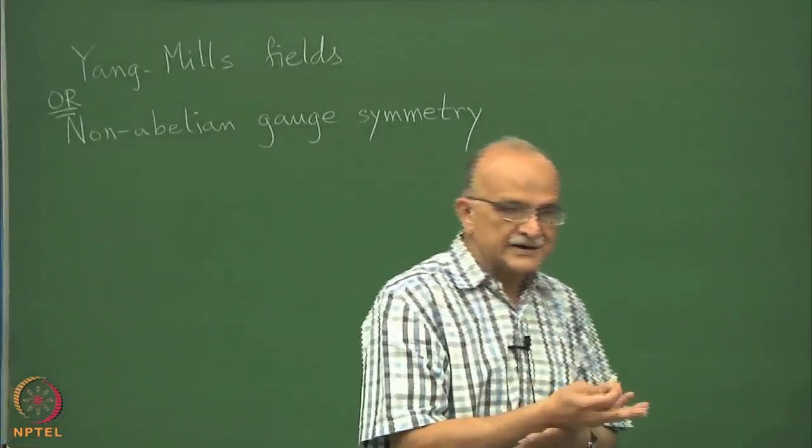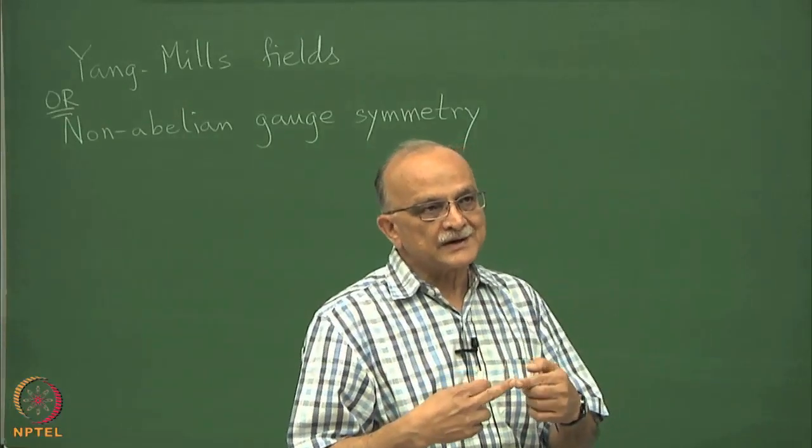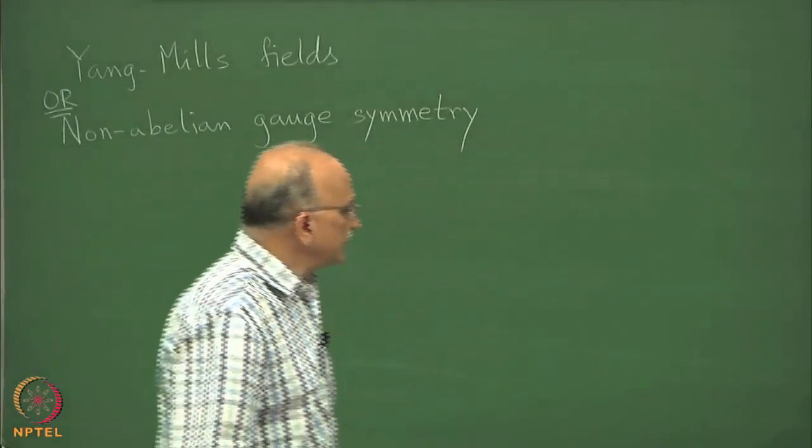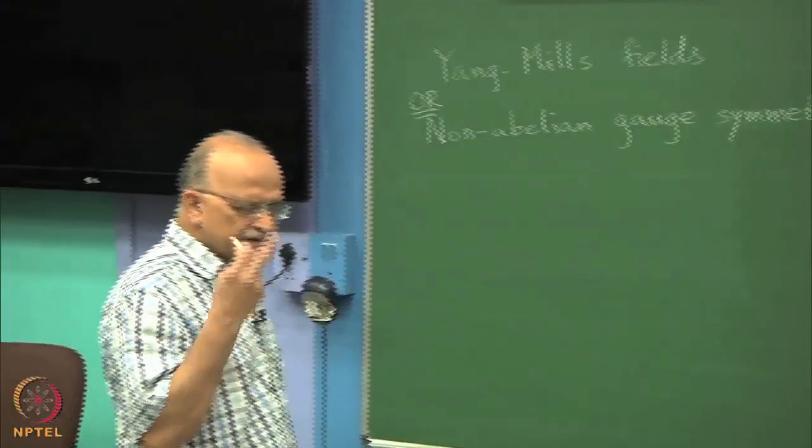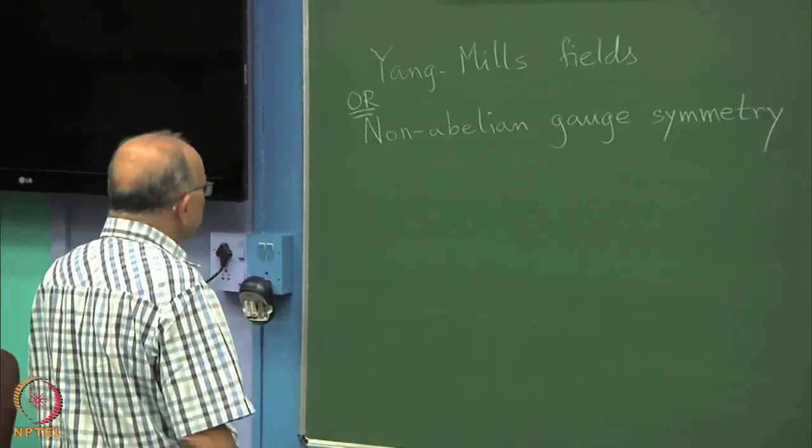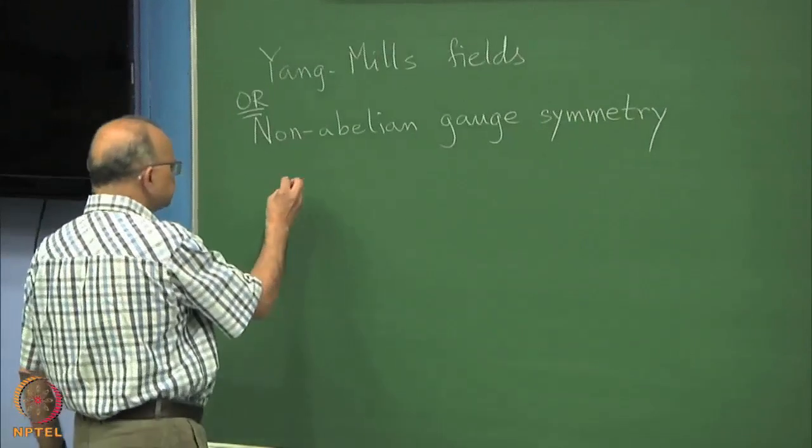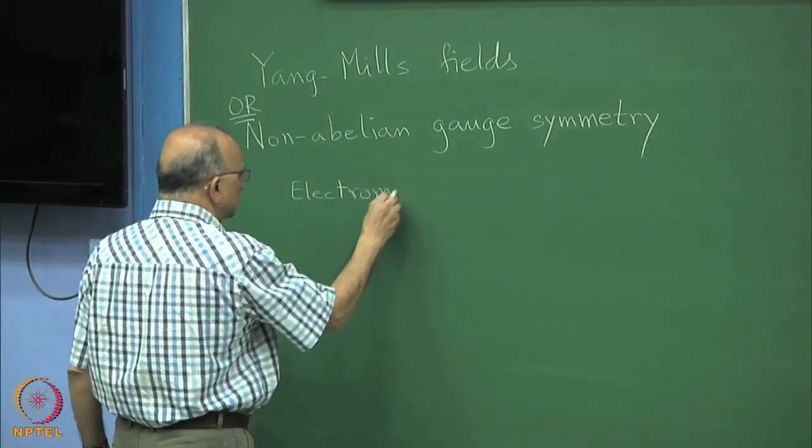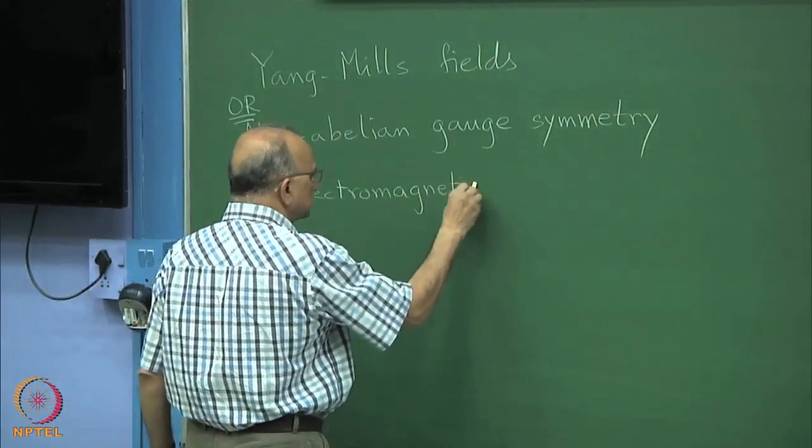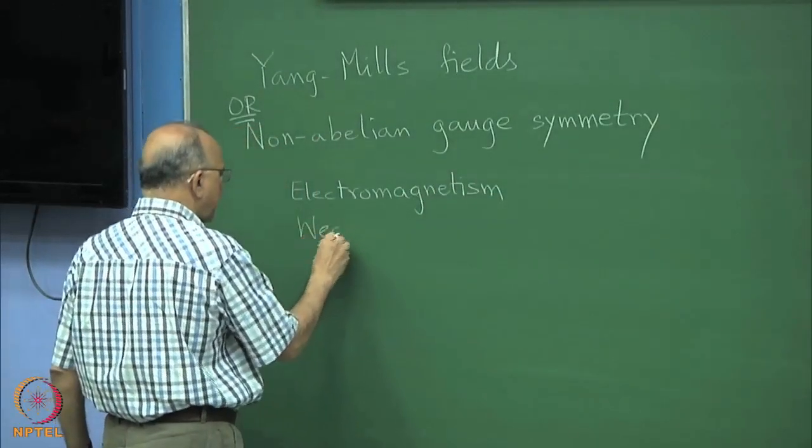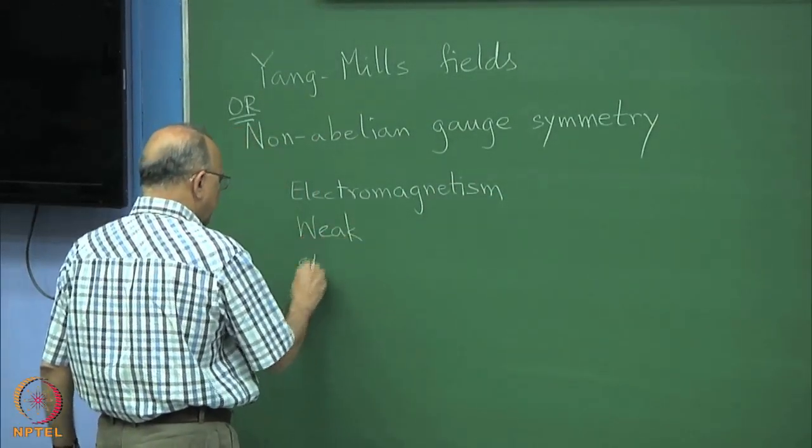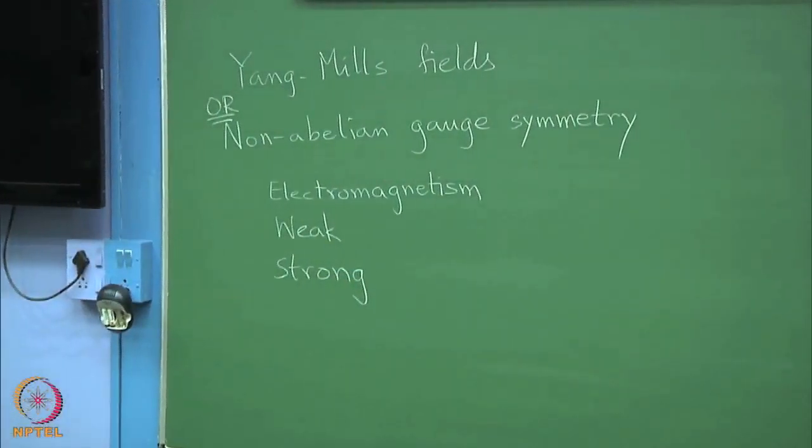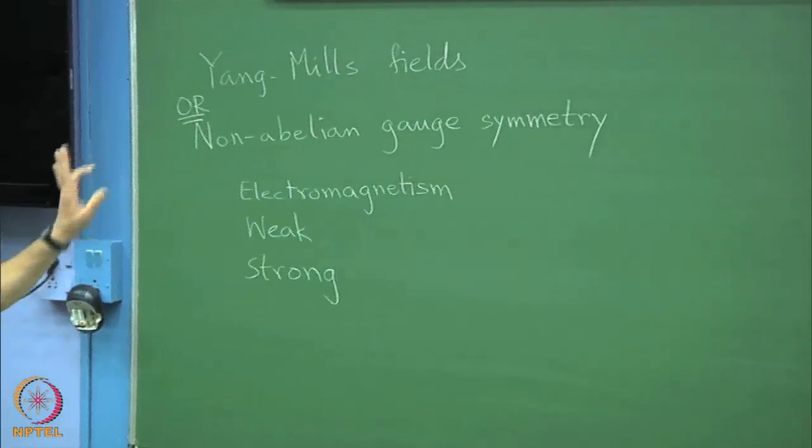The value of the electromagnetic charge, the electron charge, everything else is a multiple of that. Similarly, all electromagnetic interactions are determined by one charge. Similarly, the weak force and the strong force, so electromagnetism, all the three are described by the same symmetry principle. I should put quote marks on this, I will explain what that means.